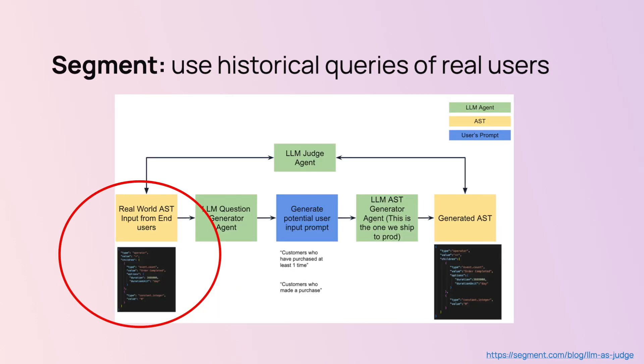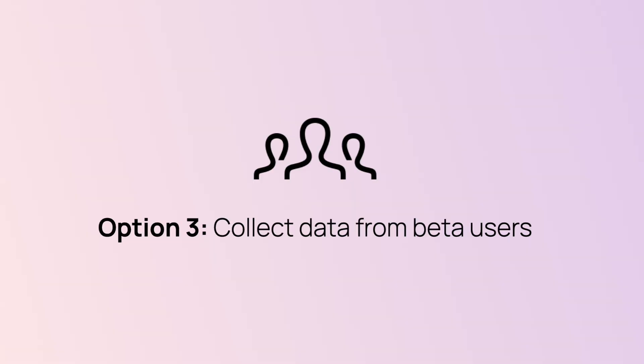Similarly, Segment builds an LLM-powered audience builder, which helps express complex query logic without code. To test it, they used examples of queries built by users before. You can also collect data from test users — if you can safely roll out a first beta version, you can just check what people are asking and then use this as an evaluation dataset.